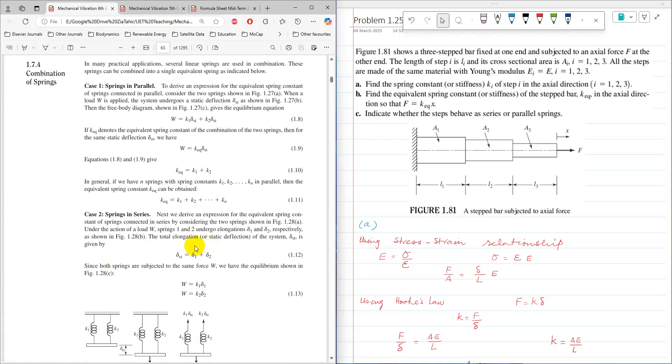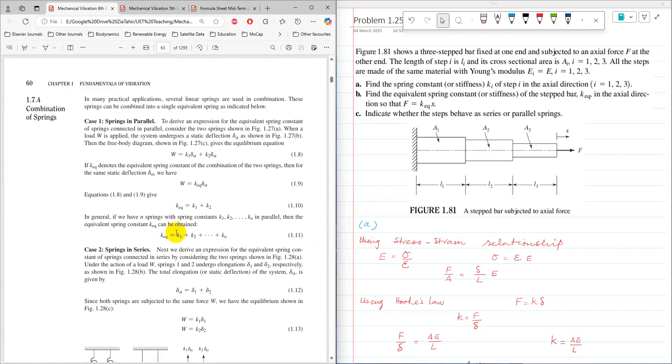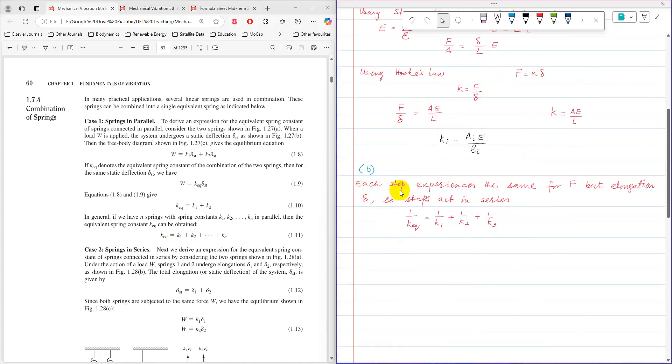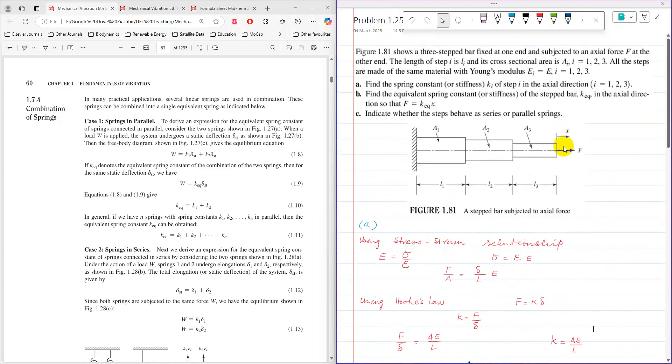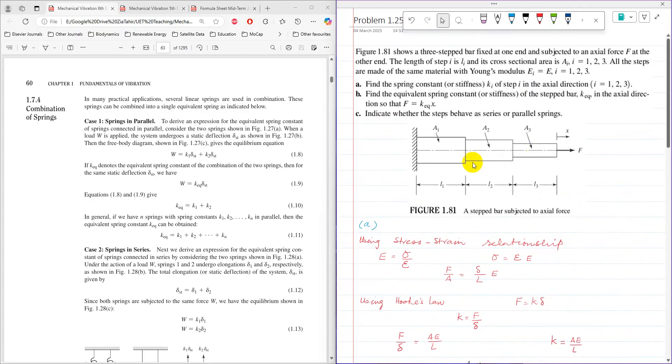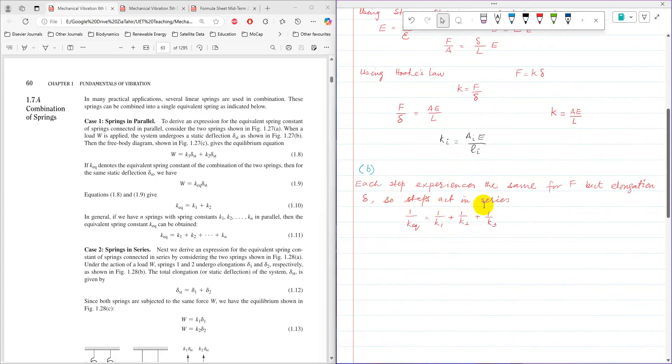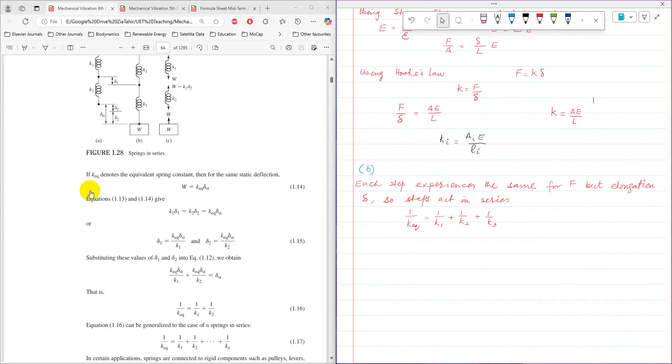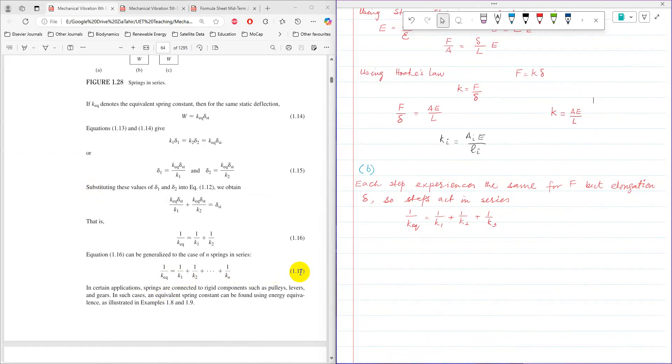To solve this one, we need to first see if the step bars are connected in series or they are connected in parallel. Now the fact here is each step experiences the same force F because that force F is same in all steps. But they have different elongation, like each will have different elongation. So steps act in series. When the springs connect in series, equation 1.7 can be used to find their equivalent spring stiffness.